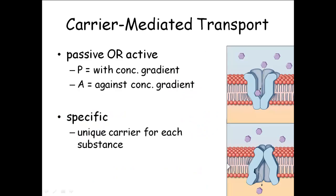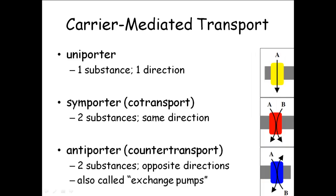There are basically different ways these carrier proteins work. Usually, we think about what's called a uniporter — like this example, bringing a particular substance into the cell, transporting one substance. Uni for one. So a carrier protein that carries one substance across is a uniporter.